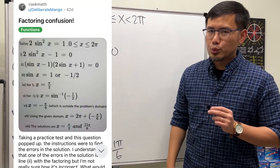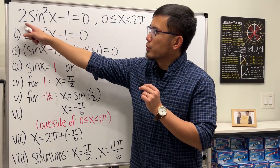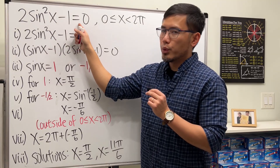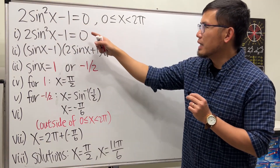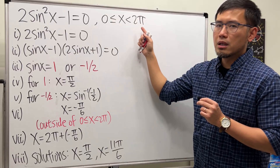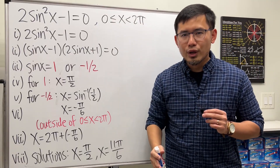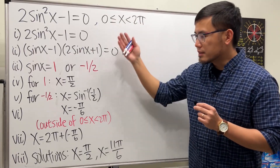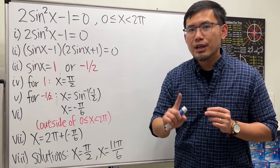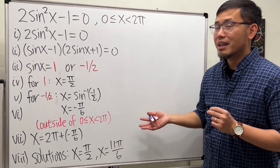Here's a question from Reddit today. We are given this trick equation: 2 sine squared x minus 1 is equal to 0. We want to solve that when x is between 0 and 2π. Instead of us doing all the work, the question gave us all these 8 steps. But there's a catch — there's a mistake, and we are going to find it.